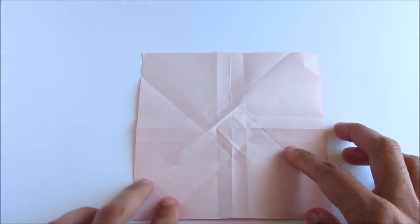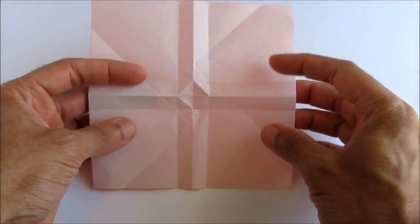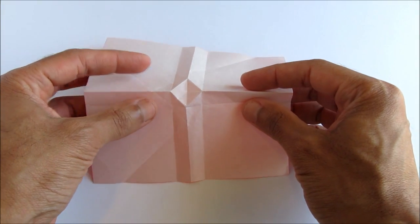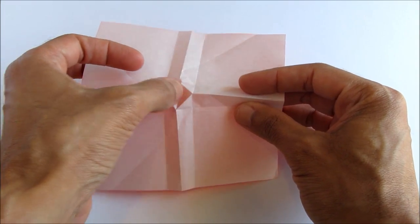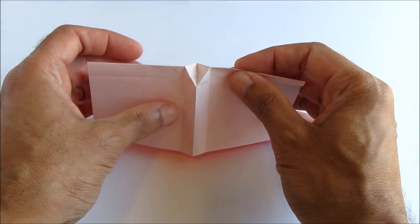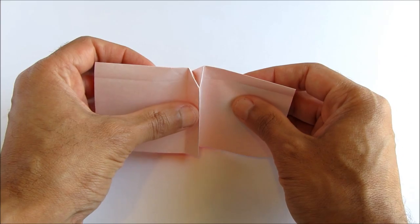Now your paper should look something like this, and what we're going to do is mountain fold along the east-west line. And as we're doing that, we're going to push in the center of the paper, a little square. And the paper should collapse nicely like this.